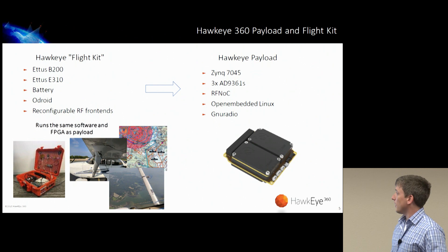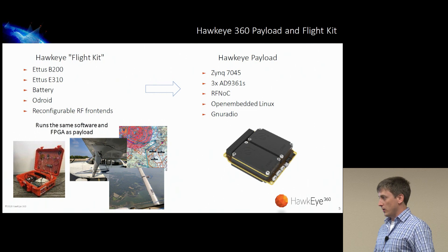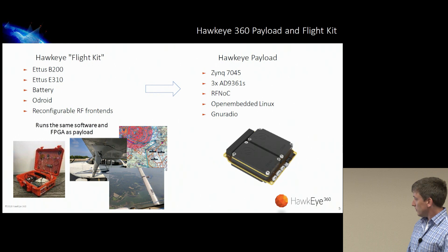This flight kit is analogous to what we're launching in two months. Our Hawkeye payload has a Zynq 7045 with three AD9361s attached. It runs RFNOC, runs OpenEmbedded, and we're running GNU Radio and deploying GNU Radio flow graphs, just like we do on the E310.